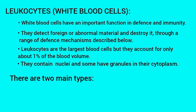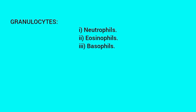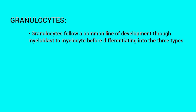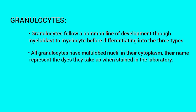There are two main types: granulocytes and agranulocytes. Granulocytes contain three types: neutrophils, eosinophils, and basophils. Agranulocytes contain two types: monocytes and lymphocytes. Granulocytes follow a common line of development through myeloblast to myelocyte before differentiating into the three types. All granulocytes have multi-lobed nuclei in their cytoplasm. Their name represents the dyes they take up when stained in the laboratory.